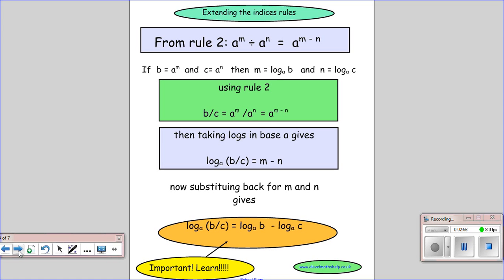So we've got a to the m divided by a to the n. And when we have the division, we do the subtraction. So we do the same thing. We define b and c in the same way and write out the logs exactly in the same way as the screen before.